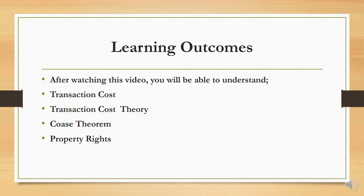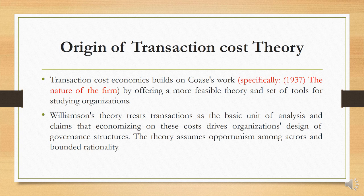The origin of transaction cost theory: transaction cost economics is built on Coase's work, specifically a paper published in 1937, 'The Nature of the Firm,' offering a more feasible theory and set of tools for studying organization. Williamson's theory treats the transaction as the basic unit of analysis and claims that economizing on these costs drives the design of governance structures. The theory assumes opportunism among actors and bounded rationality.